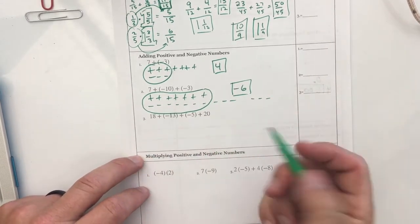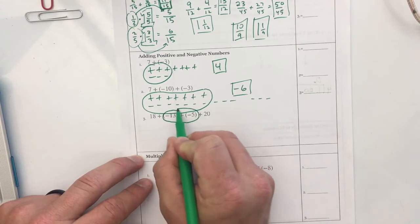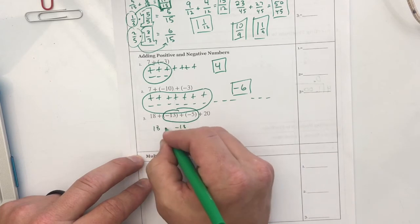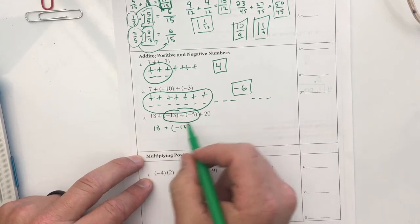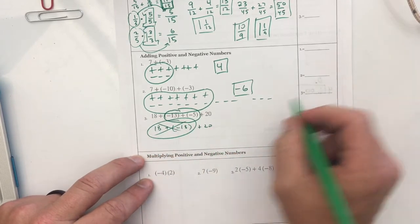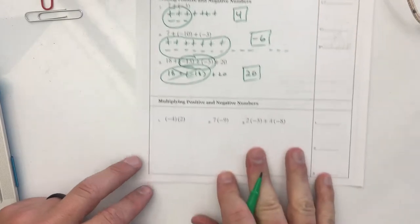I'm not going to do the tiles for this one. But how many negatives are there if I have thirteen negatives plus five negatives? Eighteen. This is negative eighteen. And if I have eighteen plus negative eighteen? That all goes away, because it's zero, and I'm left with just twenty. Wonderful.